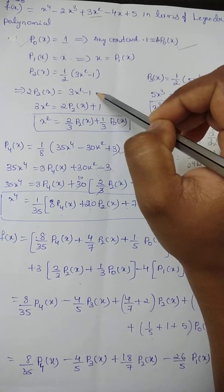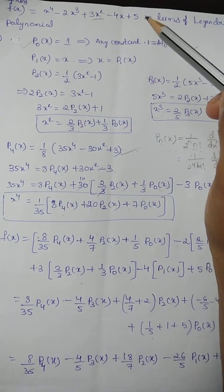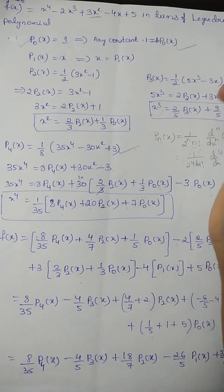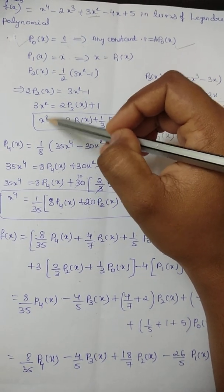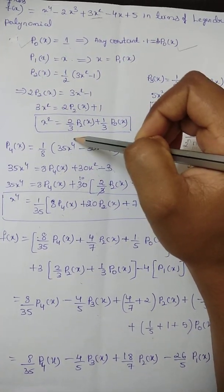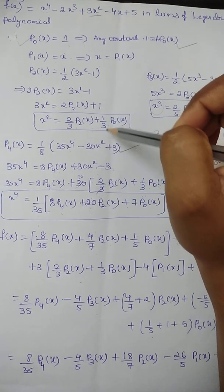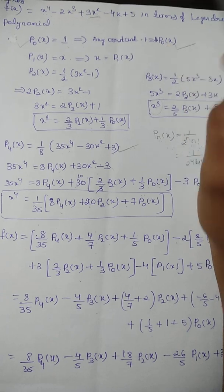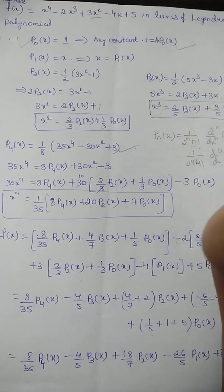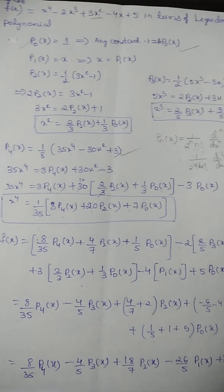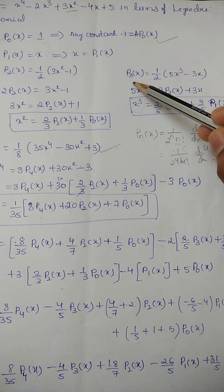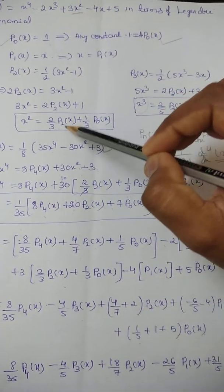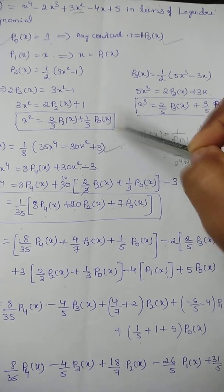So 3x² = 2P₂(x) + 1. Taking 1 to the left-hand side: x² = (2/3)P₂(x) + 1/3. And wherever the constant 1/3 appears, we write (1/3)P₀(x). So x² = (2/3)P₂(x) + (1/3)P₀(x).